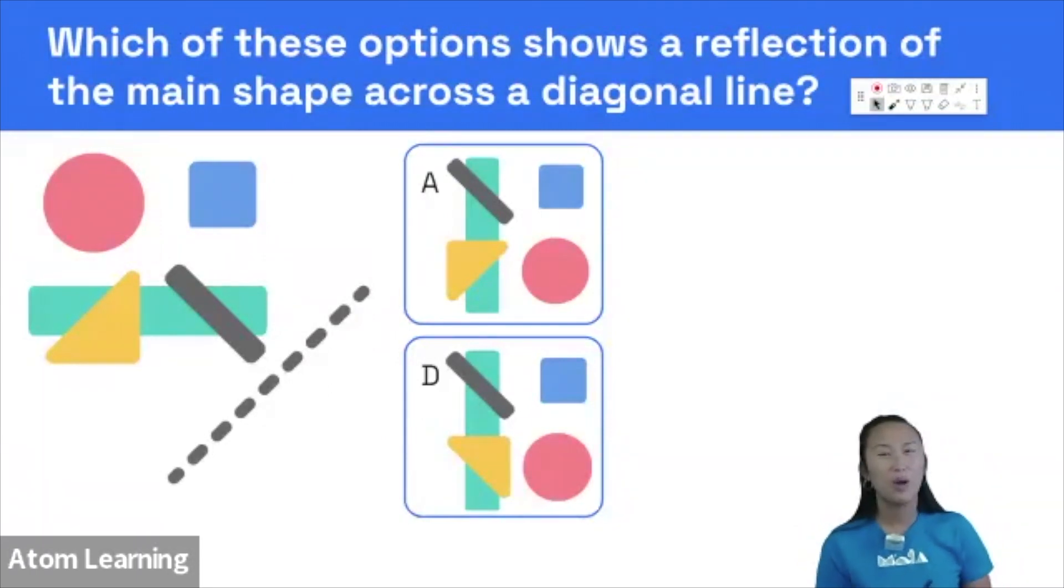So when we reflect a shape across a mirror line, what we're actually doing is drawing a perpendicular line from every element of the shape to the mirror line and duplicating that line and that element in the opposite direction. That's not really clear. Have a look at this image.